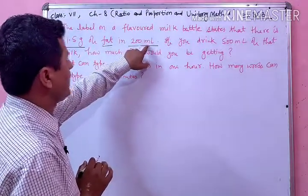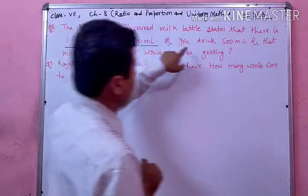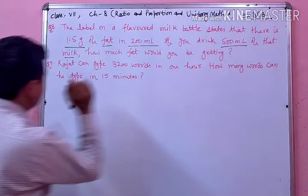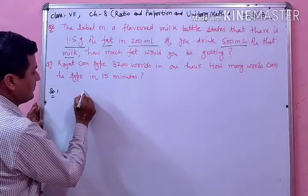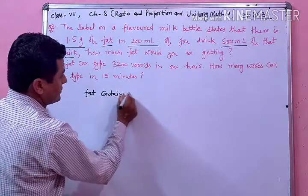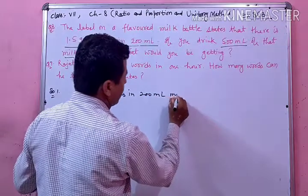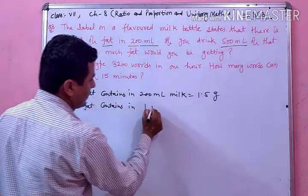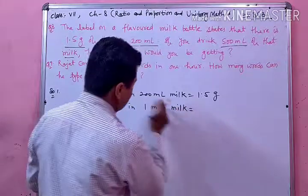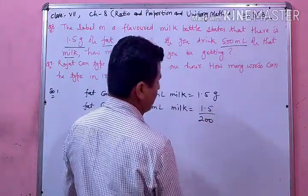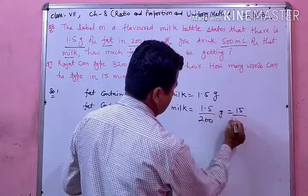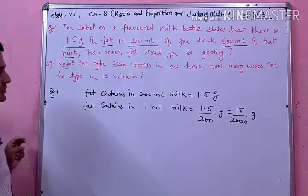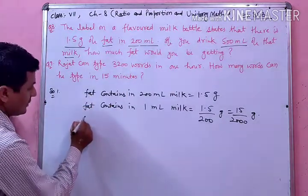अब देखिए: 200 milliliter milk के अंदर 1.5 gram fat contains है। If you drink 500 milliliter of that milk, how much fat would you be getting? बिलकुल simple question है। Fat contains in 200 milliliter milk is equal to 1.5 gram. Fat contains in 1 milliliter milk — कम होगा तो divide करेंगे, 1.5 को 200 से divide करेंगे। Decimal हटाना है तो 15 upon 2000 gram आ जाएगा। इसी तरह से 500 milliliter में कितना fat होगा।